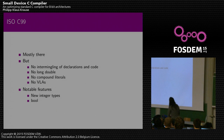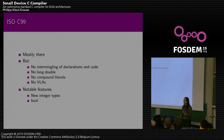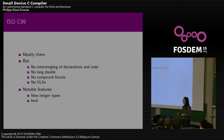For the C99 standard, we're also mostly there but with bigger gaps. The intermingling of declarations and code is not supported — declarations must be at the beginning of a block. We don't support long double, compound literals, or variable length arrays. Notable features we do have include the new integer types with fixed widths like uint_least8_t and uint_fast8_t, which are quite useful for embedded systems programming. We also support bool, which in some cases generates more efficient code than using an int as a flag.